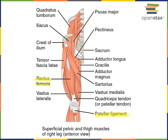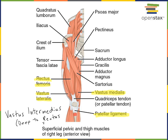Rectus femoris is found right along the midline, just anterior to the femur. Vastus lateralis is located just to the lateral side of rectus femoris, and vastus medialis is located just to the medial side of rectus femoris. The fourth muscle in the quadriceps group is vastus intermedius, and that's located deep to rectus femoris.